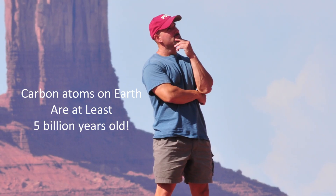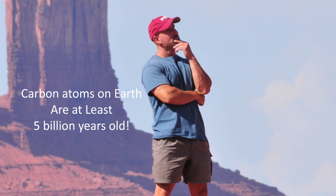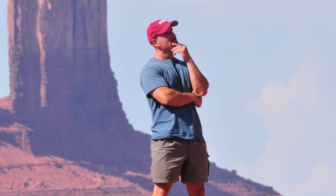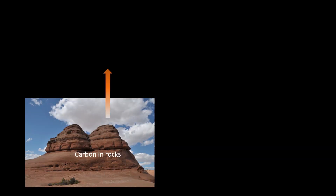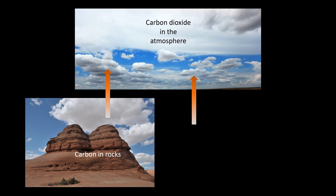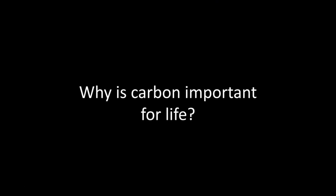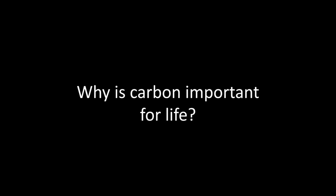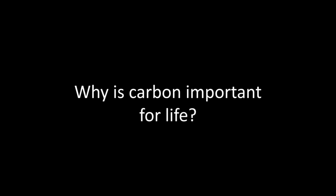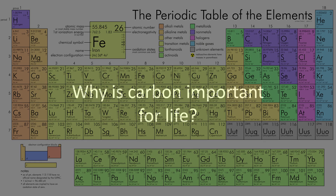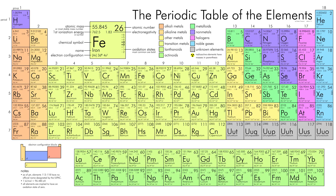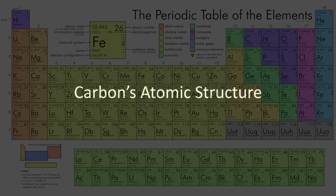That means that all the carbon on Earth and inside of you was formed inside of a star through nuclear fusion. The carbon inside of you is ancient — it's 5 billion years old — and it has been continuously recycled between rocks, the atmosphere, and living organisms, including you. Now that we know where carbon came from, why is carbon so important for life? Why not the other 91 naturally occurring elements? To understand this, we need to know something about carbon's atomic structure.